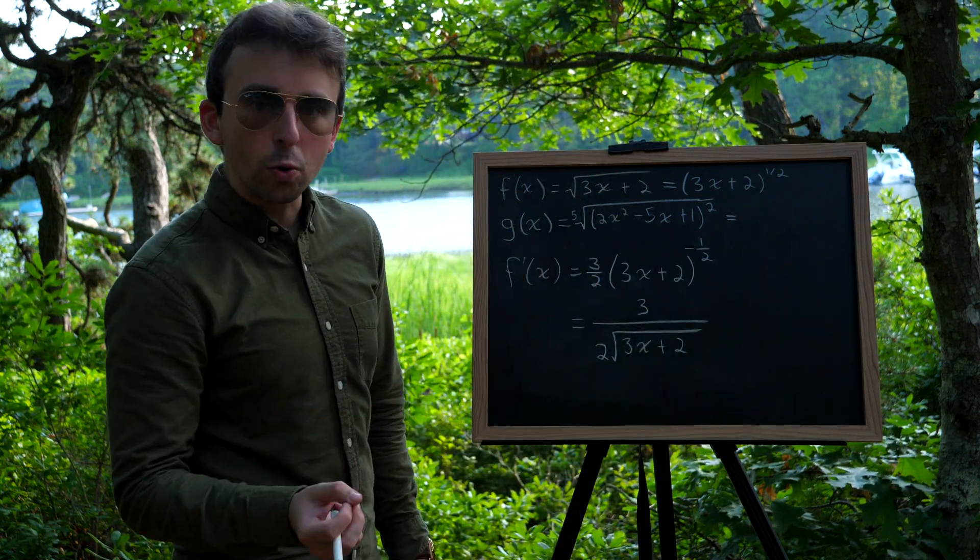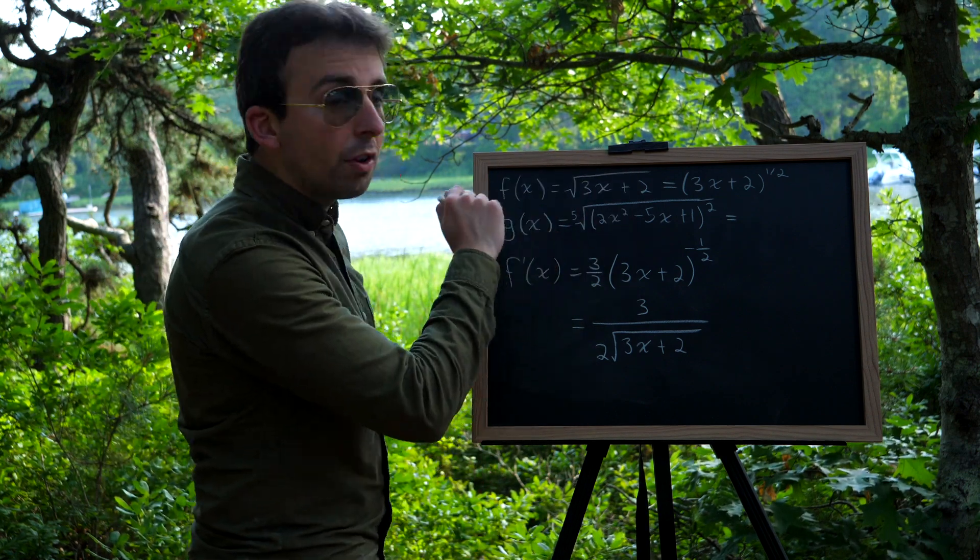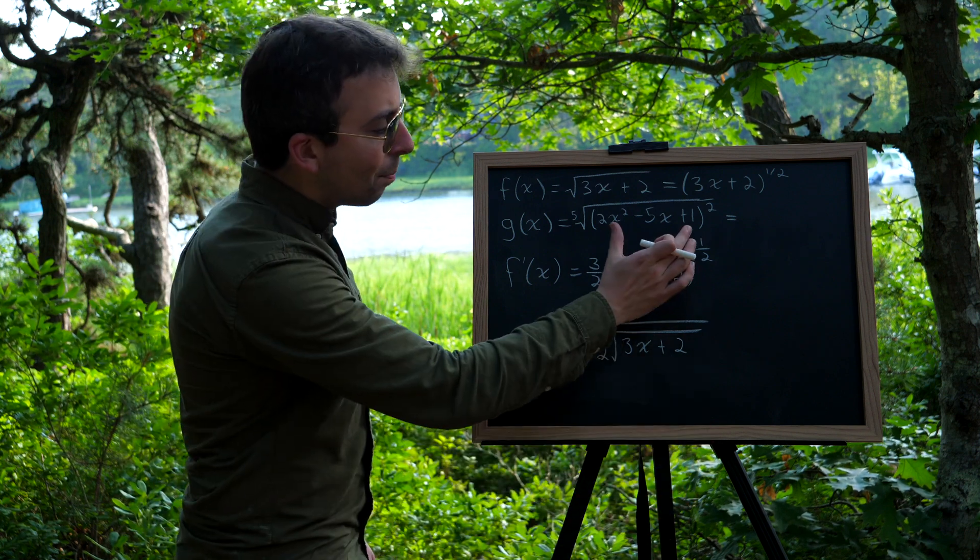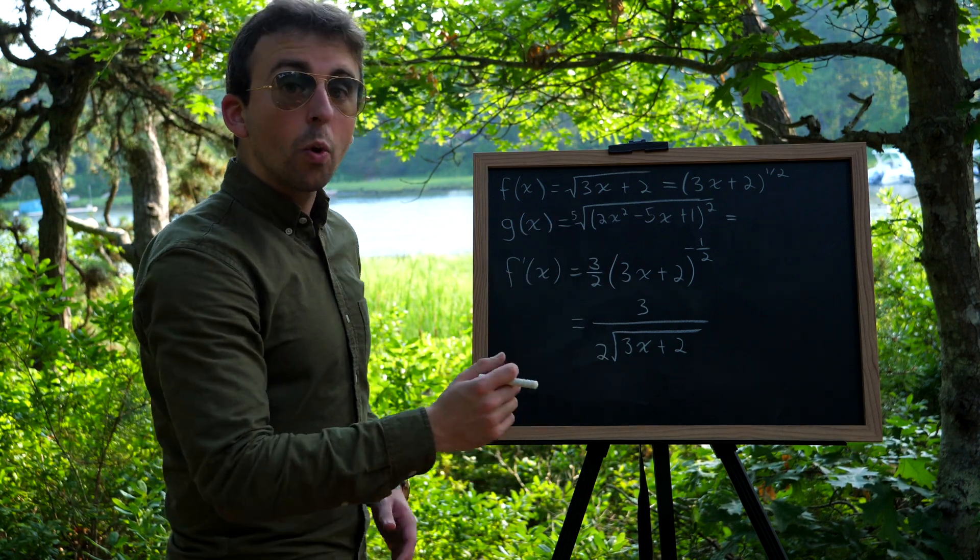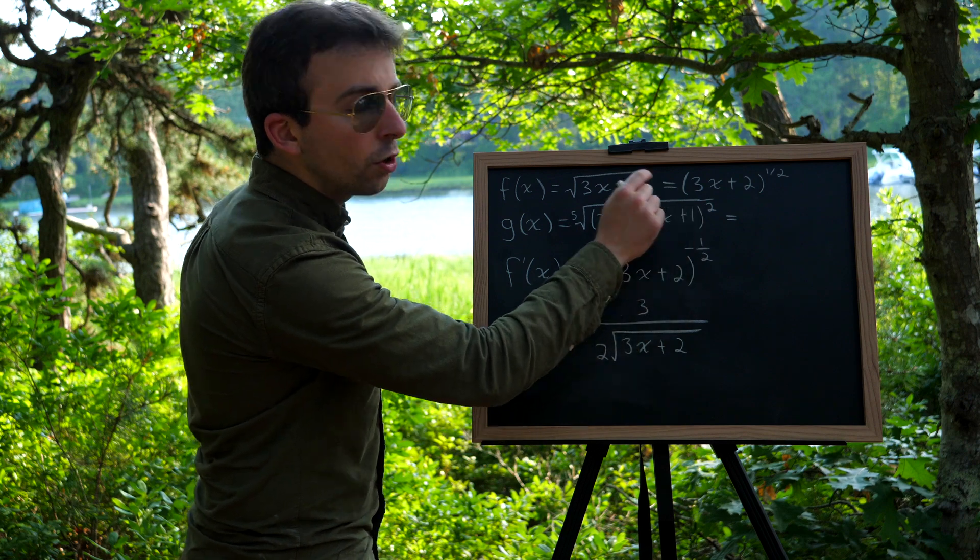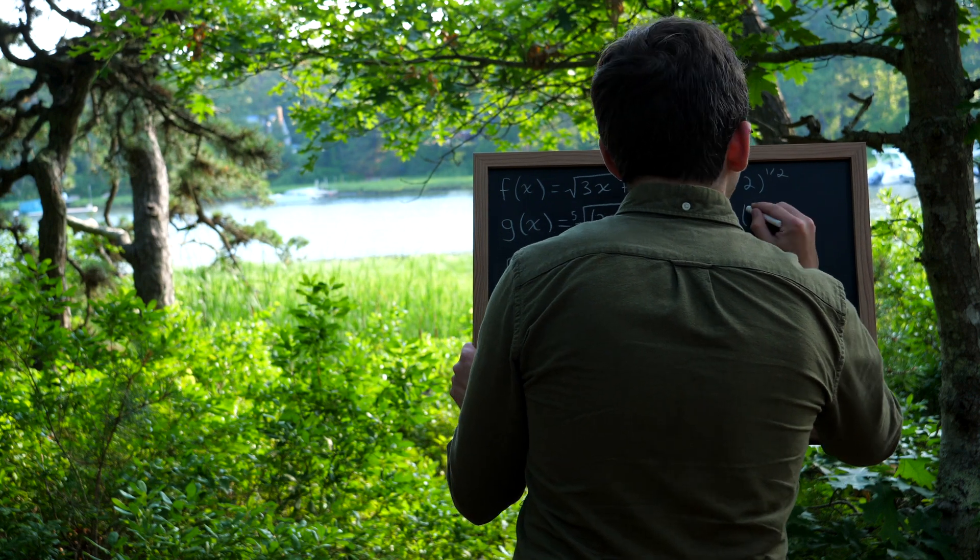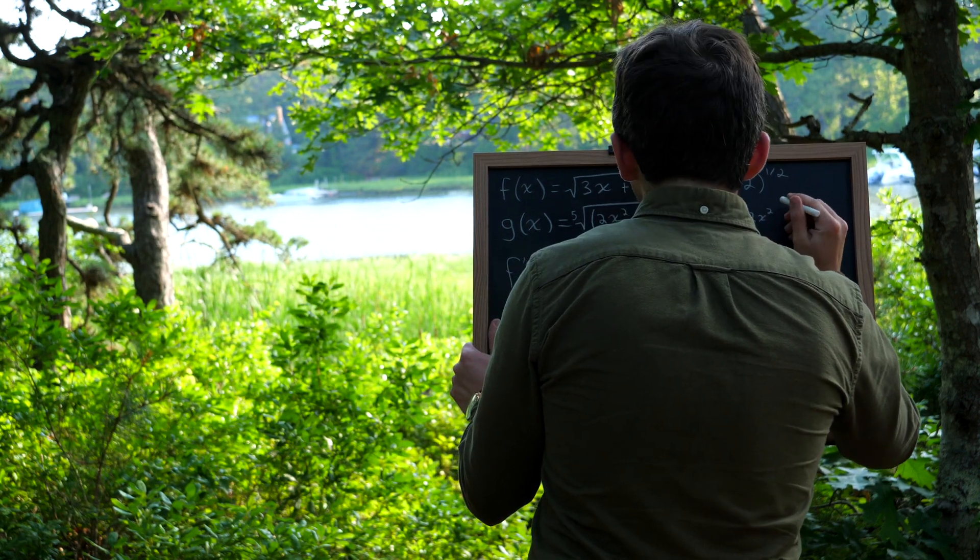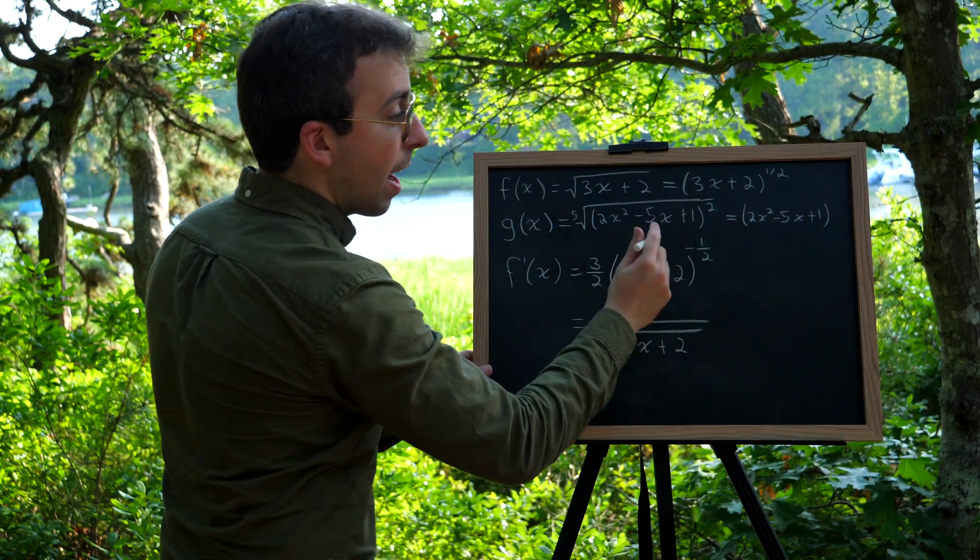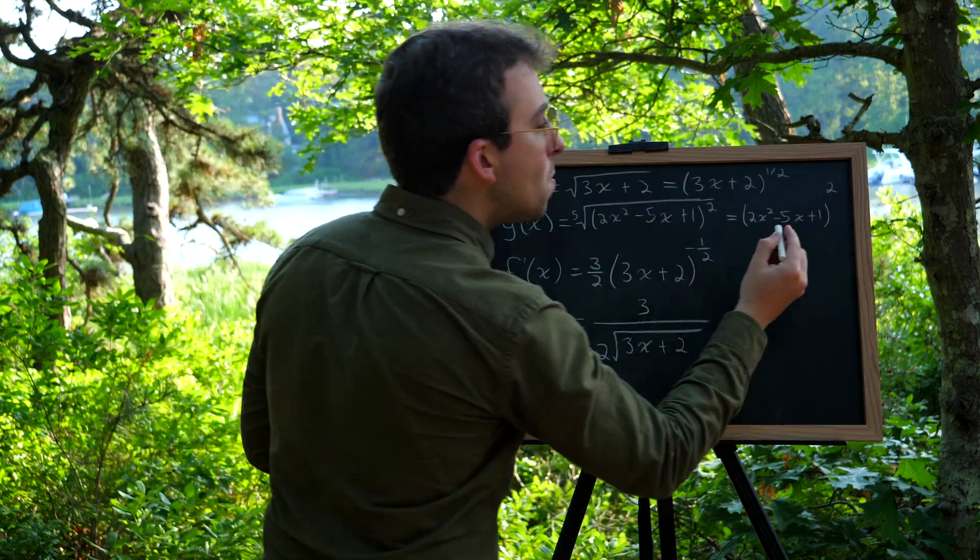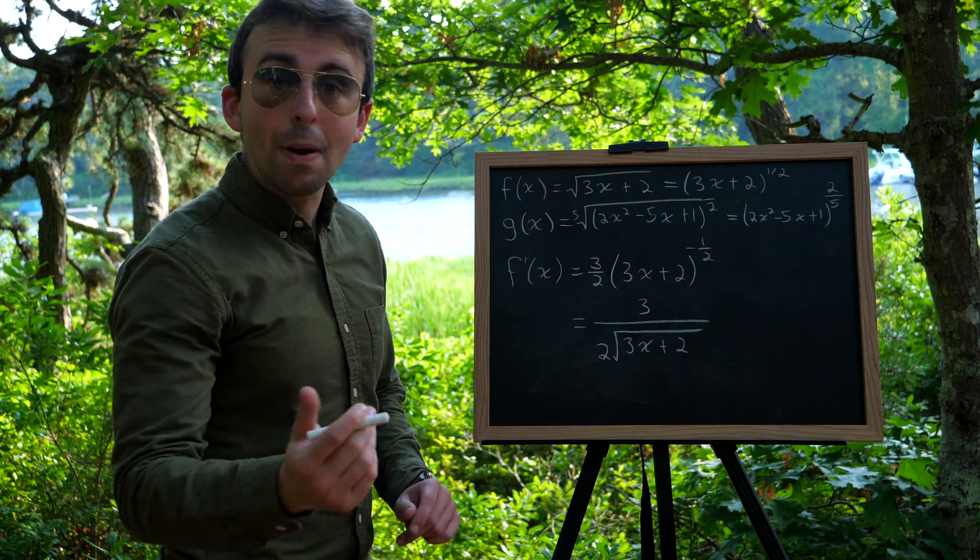And so in this case, notice we have a fifth root. So in the same way that a square root was a power of 1 half, a fifth root is a power of 1 fifth. But then the thing inside the fifth root is being raised to the power of 2. So we'll just have to rewrite it with an exponent of 2 times a fifth, or 2 fifths. And so this will become 2x squared minus 5x plus 1 to the power of 2 fifths. Now it is straightforward enough to proceed with the power rule.